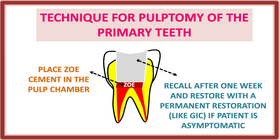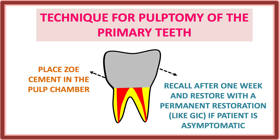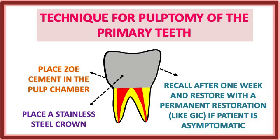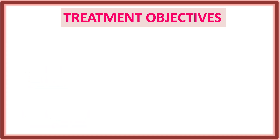If the patient is asymptomatic — no pain, no tenderness on percussion — only then restore with permanent restoration. Since it is primary dentition, place a stainless steel crown.